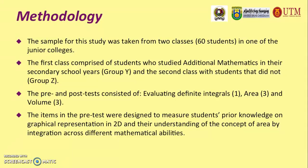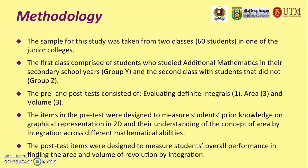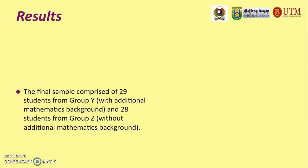Finally, the post-test was given to students after the completion of the intervention lessons. The post-test items were designed to measure students' overall performance in finding the area and volume of revolution by integration. The initial sample was 60 students in total; however, three students were excluded since they did not complete the entire intervention lessons. The final sample comprised 29 students from Group Y, those with additional mathematics background, and 28 students from Group Z, without additional mathematics background.